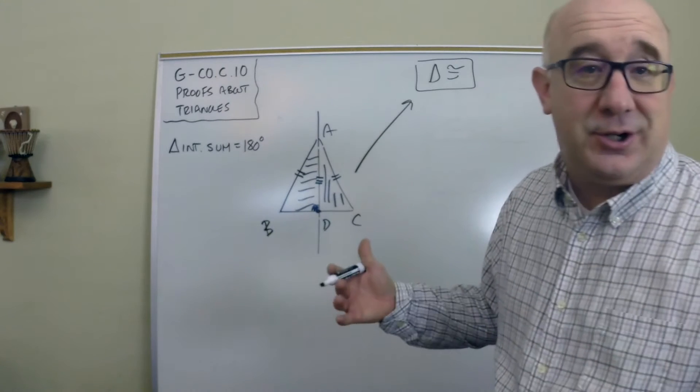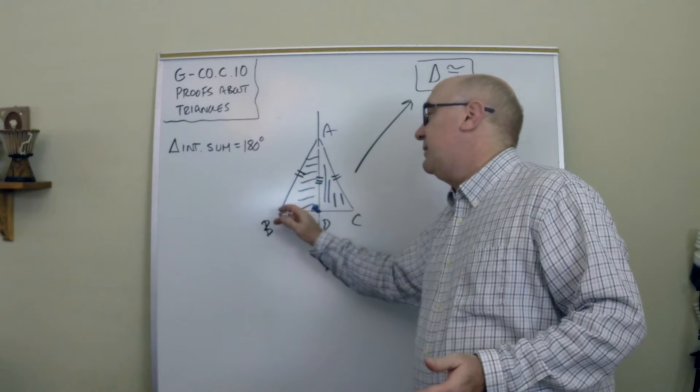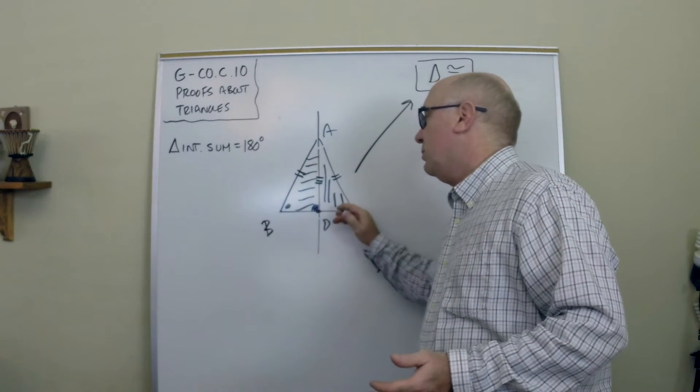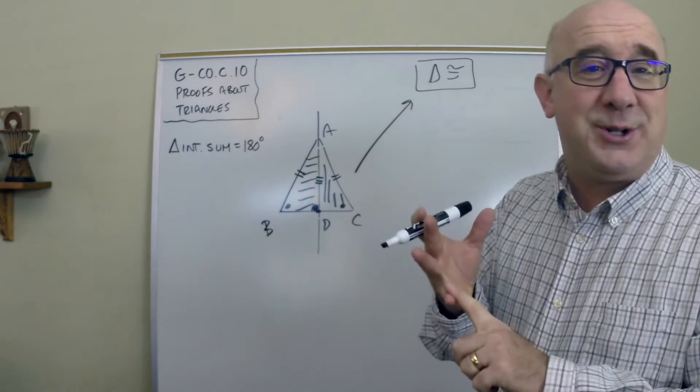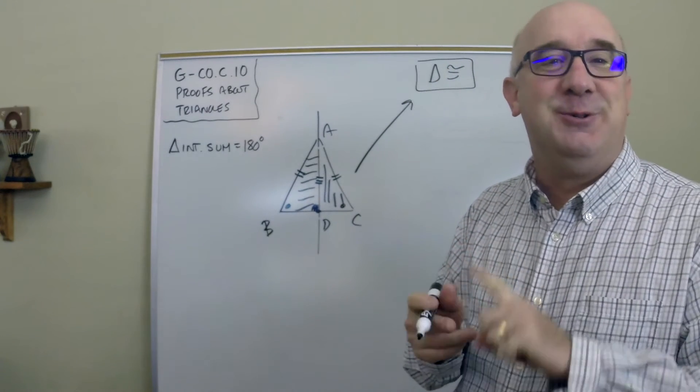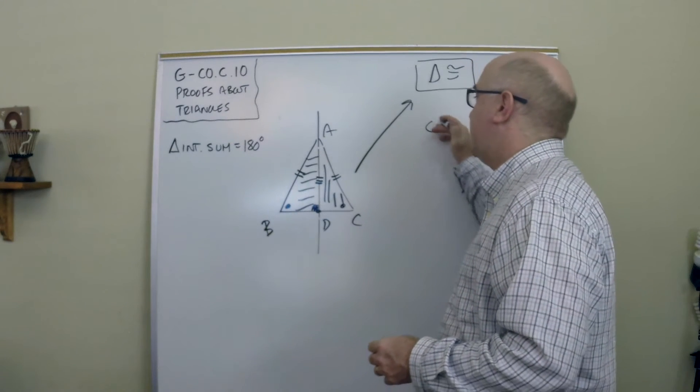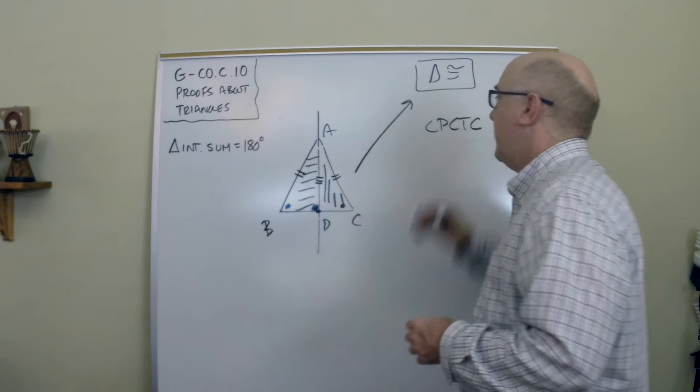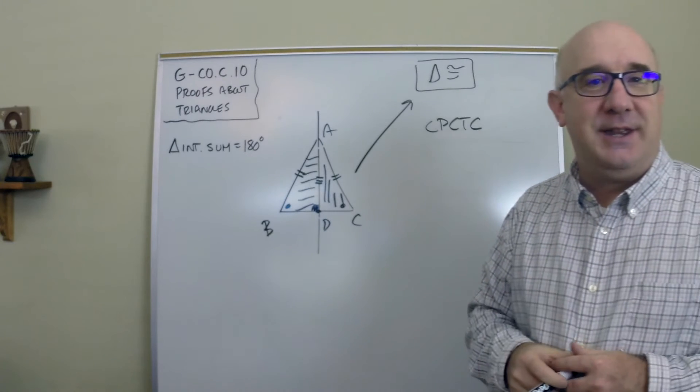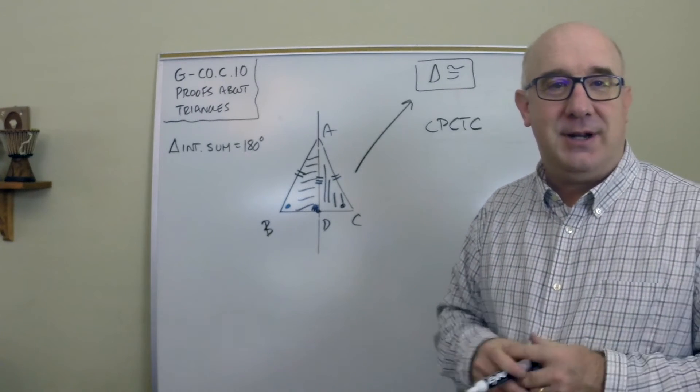Another way, and once you've established they're congruent by the way, is then you would say the base angles are equal because corresponding parts of congruent triangles are congruent. Which is often known as CPCTC. That's a fairly cryptic thing but used all throughout geometry.